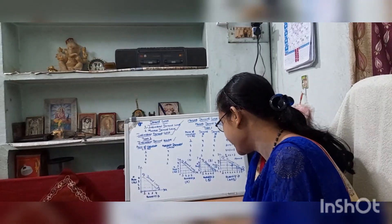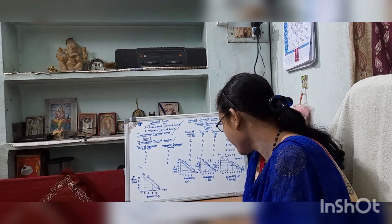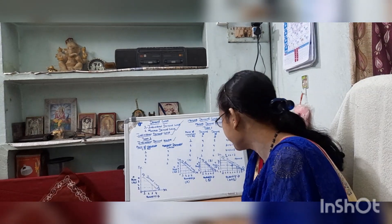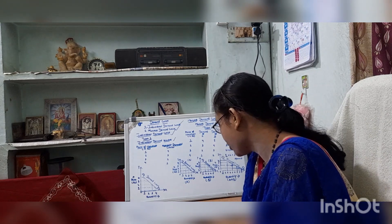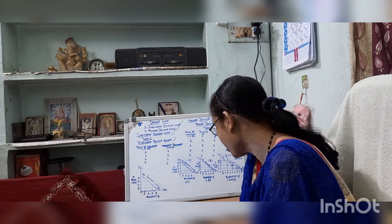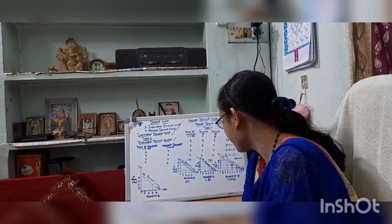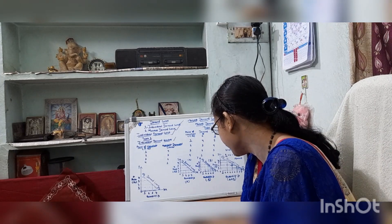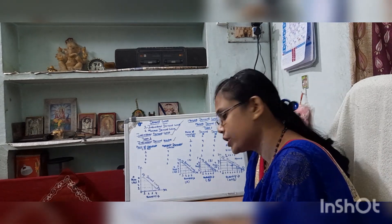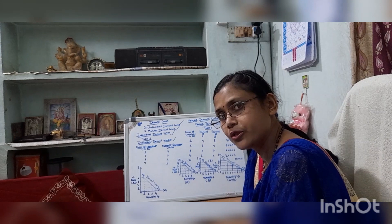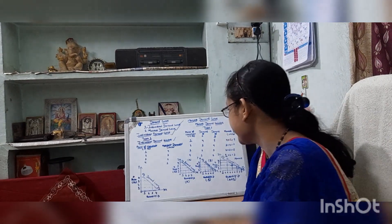When a demand schedule is drawn on a graph paper, it becomes the demand curve. A demand curve shows graphically the various quantities demanded of a commodity by a particular household at various levels of price.